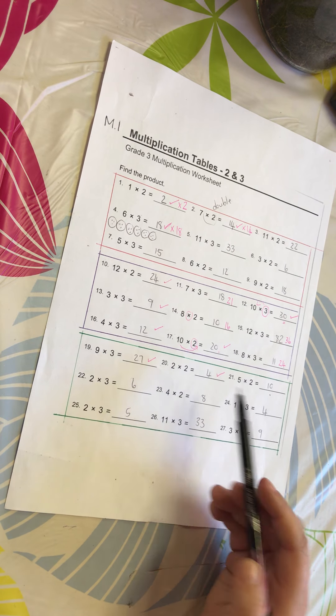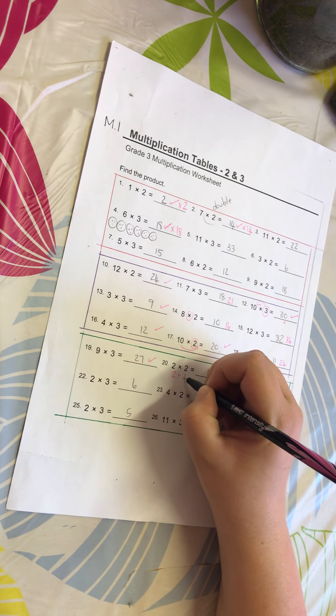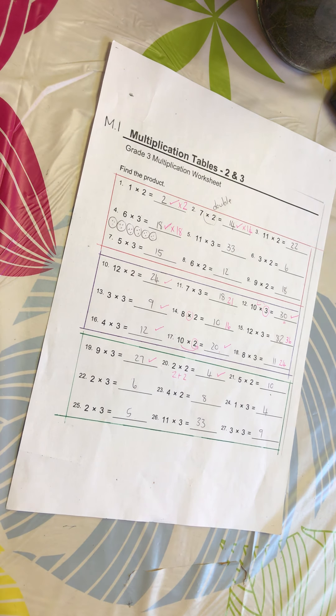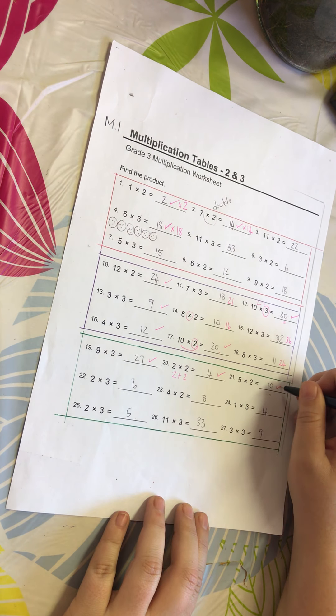That's the only one that's the same as its plus sum, because 2 plus 2 is also 4 and 2 times 2 is also 4. 2 times 2 is literally the only one that stays the same whether it's plussed or multiplied. Number 21: 5 times 2 is 10.